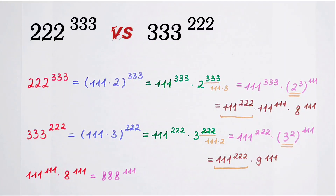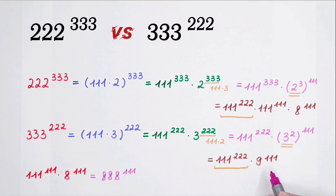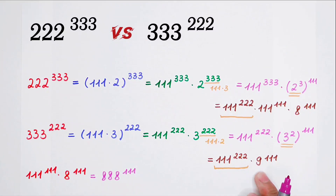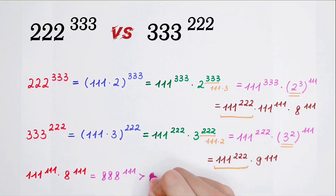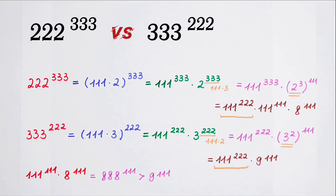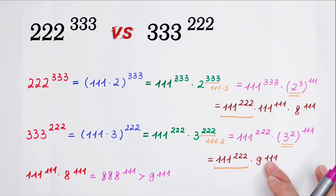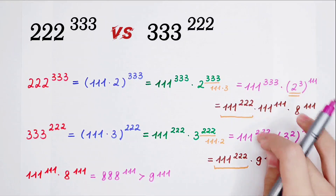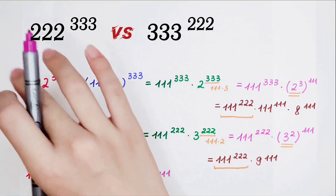Now I compare this with 9 to the power of 111. They have the same exponent 111, so we just compare the bases: 888 is much larger than 9. So 111 to the power of 222 times 888 to the power of 111 is larger than 111 to the power of 222 times 9 to the power of 111. This means the first expression is larger than the second — step by step, larger than this, larger than this, larger than this.